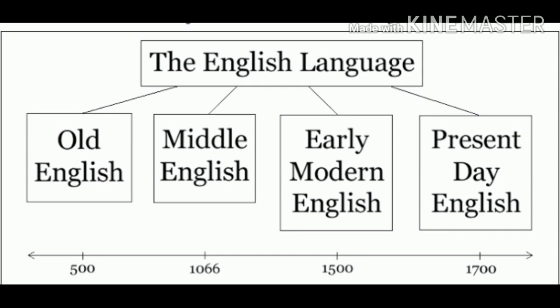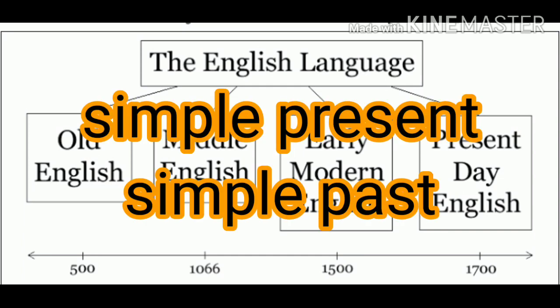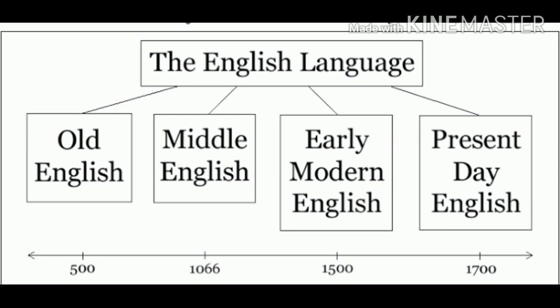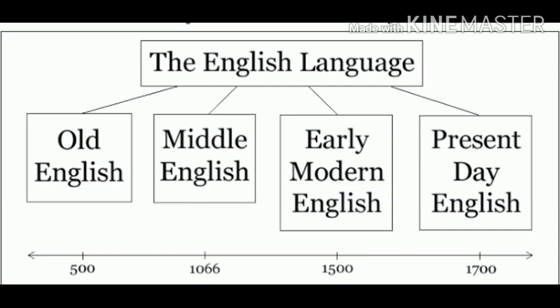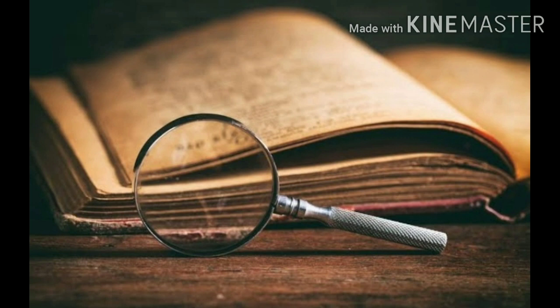Another characteristic of Old English was that it had only two simple tenses: present and past. The verb form was divided into two great classes — weak and strong — which are now called regular and irregular verb forms. Old English was very flexible; we could blend a word for various purposes. The main helping features were prefixes and suffixes added to a single root word.